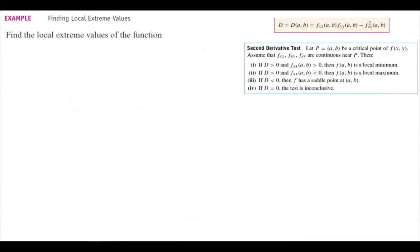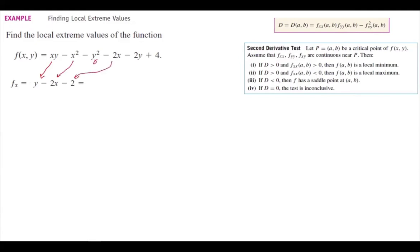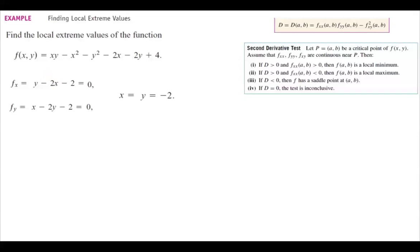Let's use the second derivative test to find local extreme values of f(x, y) = xy − x² − y² − 2x − 2y + 4. The partial derivative with respect to x is y − 2x − 2; set it equal to 0. The partial derivative with respect to y is x − 2y − 2; set it equal to 0. Solving this system gives x = y = −2.